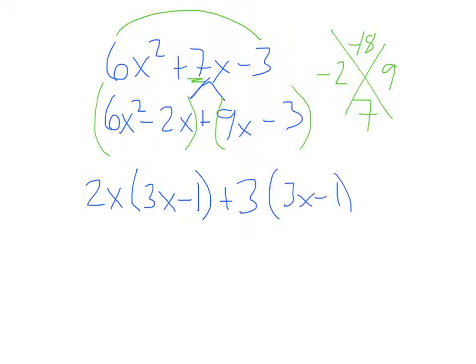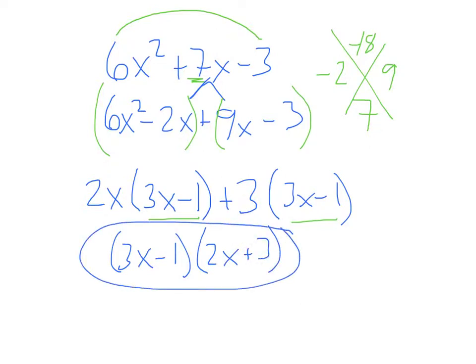What you'll notice are these two should be the same. The two binomials should be the same whenever you do rainbow method. Now what we're going to do is we're going to take the 3x minus 1. That's one of our factors. The other factor is the leftovers, 2x plus 3. And we are all factored.